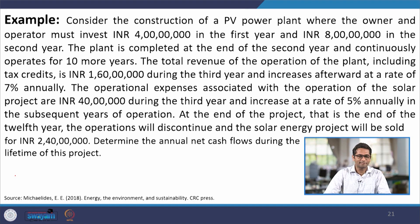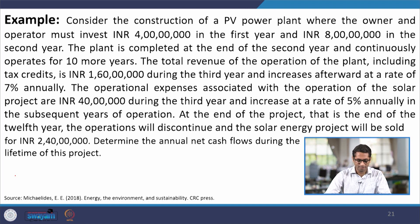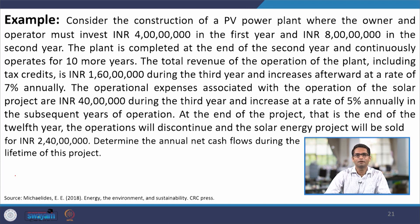This 7 percent annual increase means you are increasing the charge to consumers — if you sell electricity at 4 rupees today, you increase that by 7 percent next year. Further, operational expenses are also expected to rise: it has been assumed these are around 40 lakhs per year, rising at 5 percent annually due to salary increases and inflation affecting equipment and raw material prices. At the end of the project, remaining material — metals or recoverable silica from the PV plant — is expected to fetch around 2 crores 40 lakhs as salvage value.